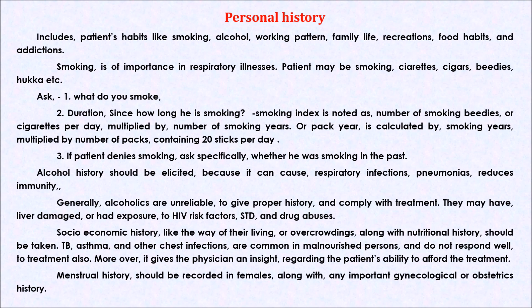Socio-economic history — like the way of living or overcrowding — along with nutritional history should be taken. TB, asthma, and other chest infections are common in malnourished persons and do not respond well to treatment. Moreover, it gives the physician an insight regarding the patient's ability to afford treatment. Menstrual history should be recorded in females, along with any important gynecological or obstetric history.